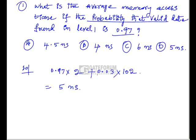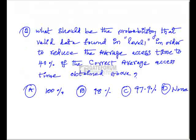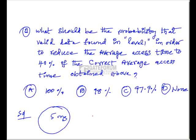So there is another question on this data. The second question on this linked data is: what should be the probability that valid data found in level 1 in order to reduce average access time to 40 percent of the correct average access time obtained above? What is the correct access time obtained above? Average access time 5 nanoseconds. So this we have to reduce to 40 percent.